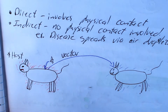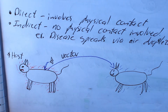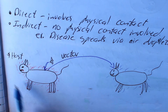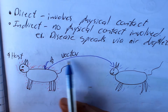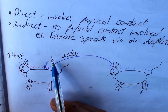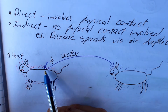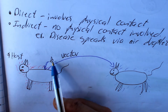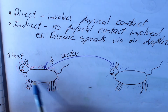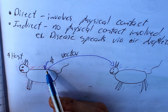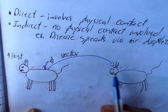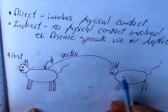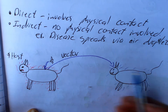This is an example of direct contact — it involves physical contact. Here we have an example of indirect transmission, which does not involve physical contact. We've got our host, the carrier of a pathogen, and here we have a mosquito that acts as a vector. The mosquito bites and gets infected with the same pathogen, then goes and bites the healthy animal, infecting it.